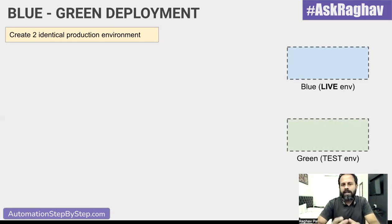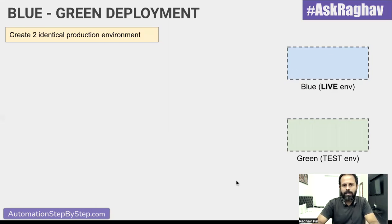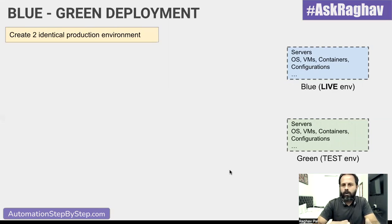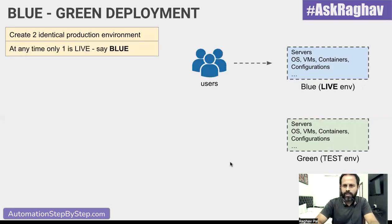In our case, let's say the blue environment is the live environment. The other environment is kept idle or for testing, and all new deployments are done and tested on the idle or test environment. When we say environment, it is a combination of all the servers, operating systems, containers, virtual machines, or anything required to run the application. So we have two identical production environments and users are on one of them.